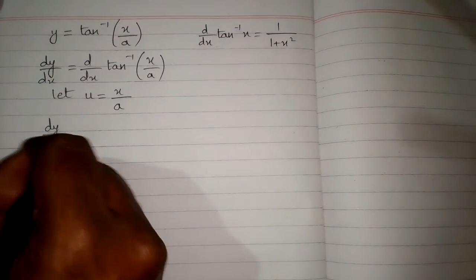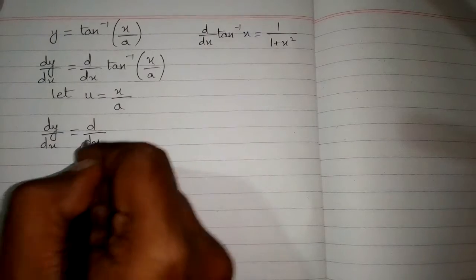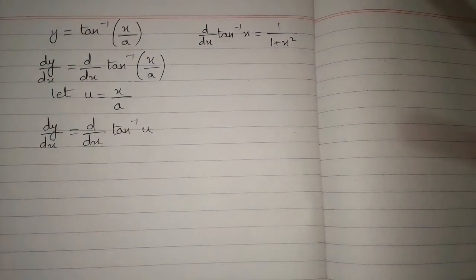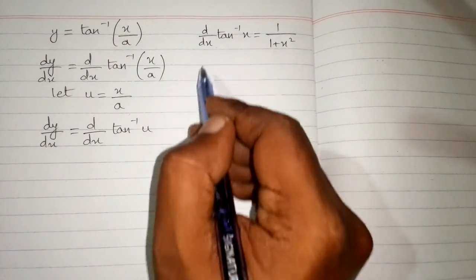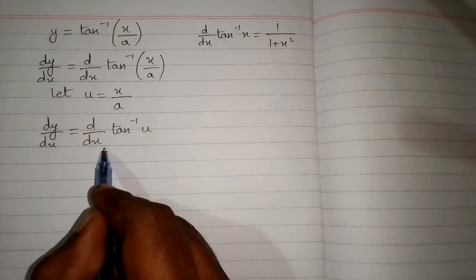Now the derivative dy/dx equals d/dx of inverse tangent of u. Now in order to apply this formula, this variable and this variable must be same. And here we have u and x, so they are different.